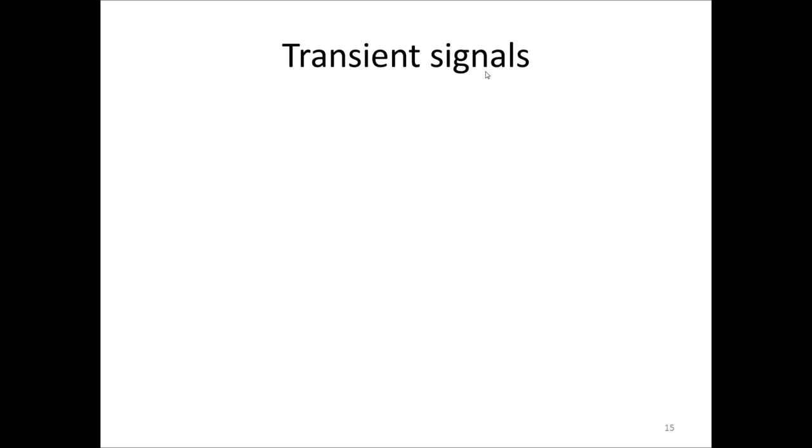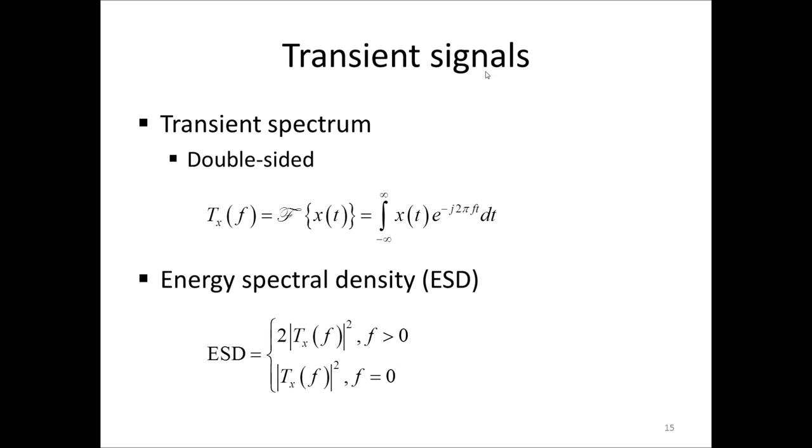Finally, we have the transient signals. For a transient signal, we have two different spectra to use. Either we can use the transient spectrum. This is simply the continuous Fourier transform of the signal. This is obviously then a double-sided spectrum. And it has the nice property that if the signal x of t is a force, then the value at zero equals the impulse of the force, as we will see.